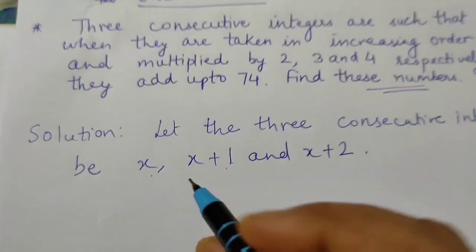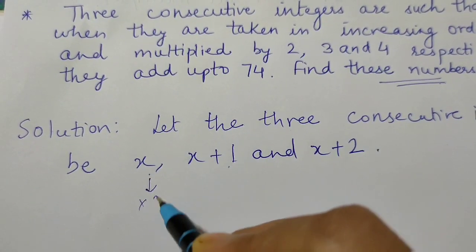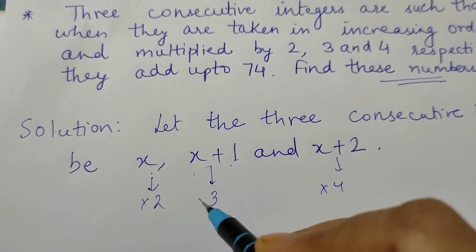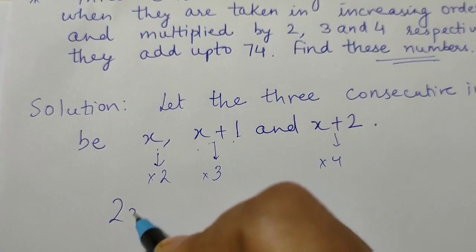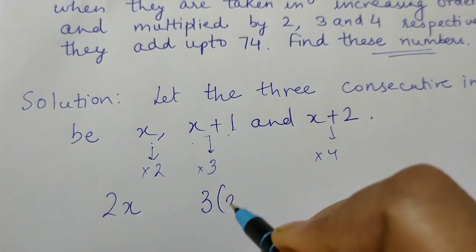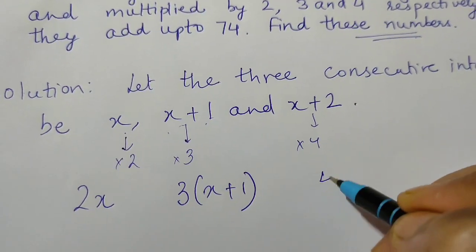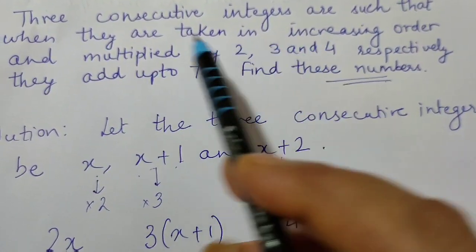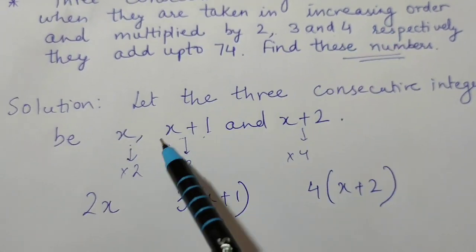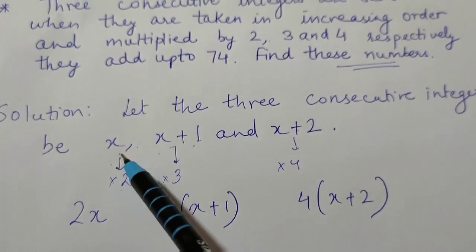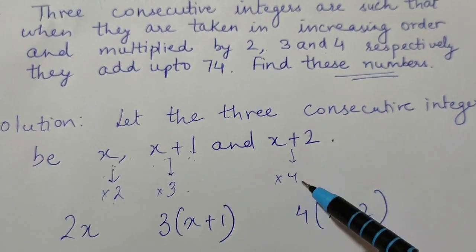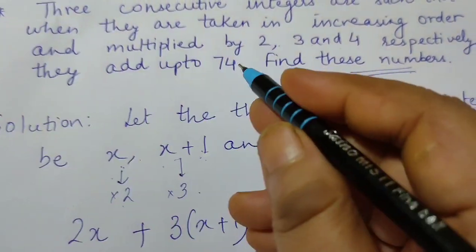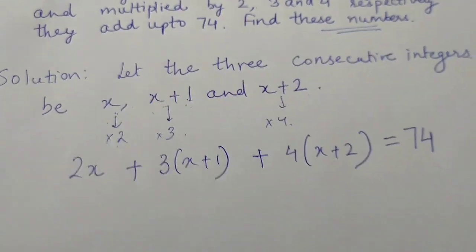They have to be multiplied by 2, 3 and 4 respectively. So x into 2 is 2x; 3 into x plus 1 is 3(x+1); and 4 into x plus 2 is 4(x+2). We multiply 2 with the first integer, 3 with the second, and 4 with the third. When we add them the result equals 74, so we have the equation.